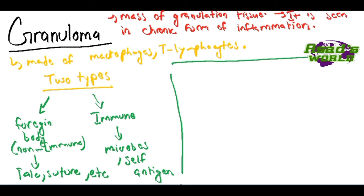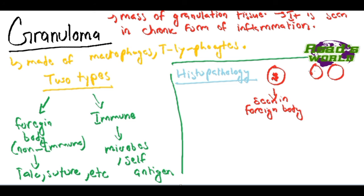Now I'm going to talk about the histopathological picture of granuloma. Basically you see two types of giant cells. In foreign body, the giant cells have a centrally darker region, and the other type are called Langhans type giant cells, which are found in immune type.